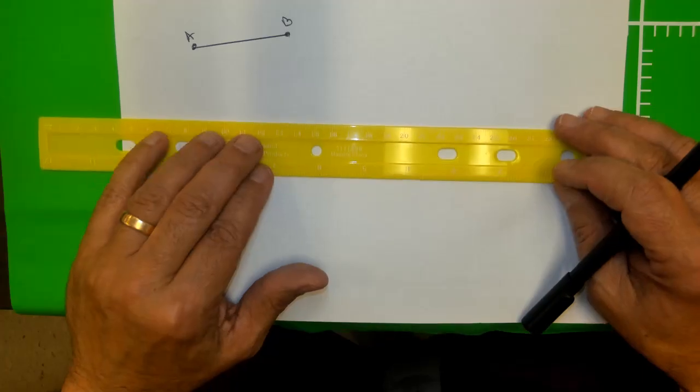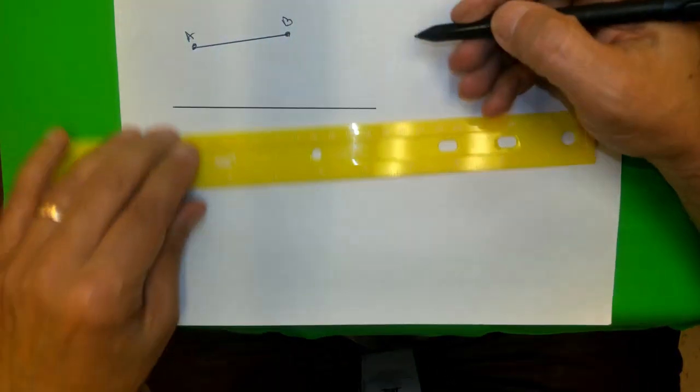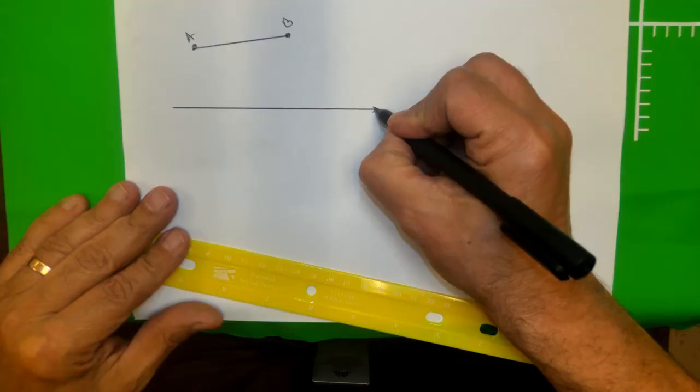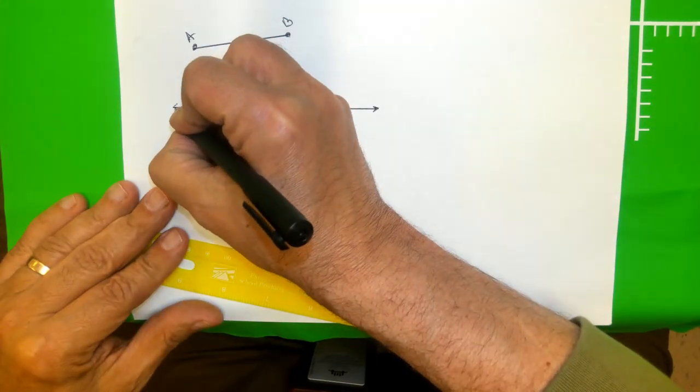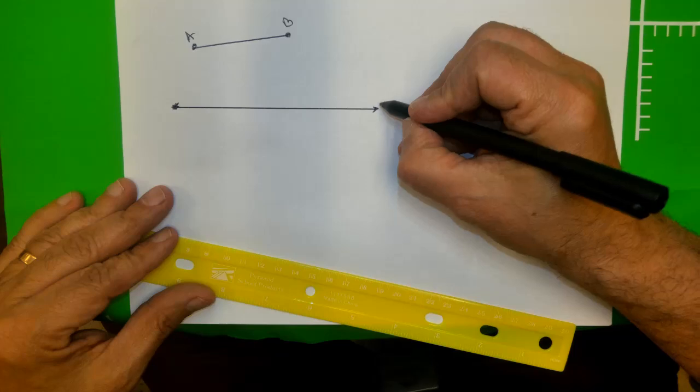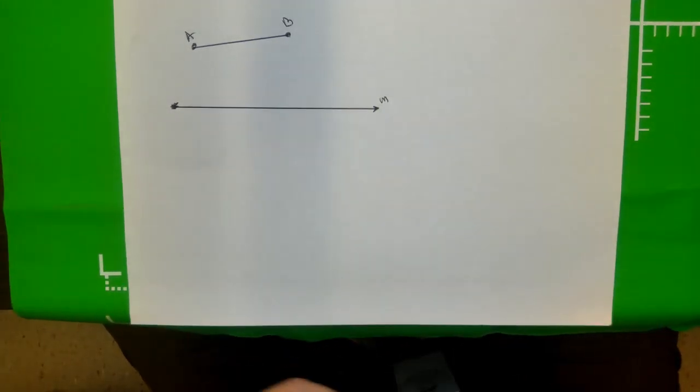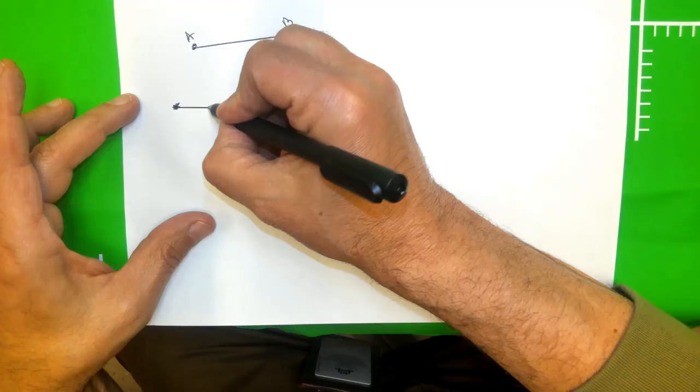So now you can draw a line. And remember, a line goes forever - that's the reason I'm going to draw these two arrows. Let's call this line M. So you may want to say step one: draw a line.